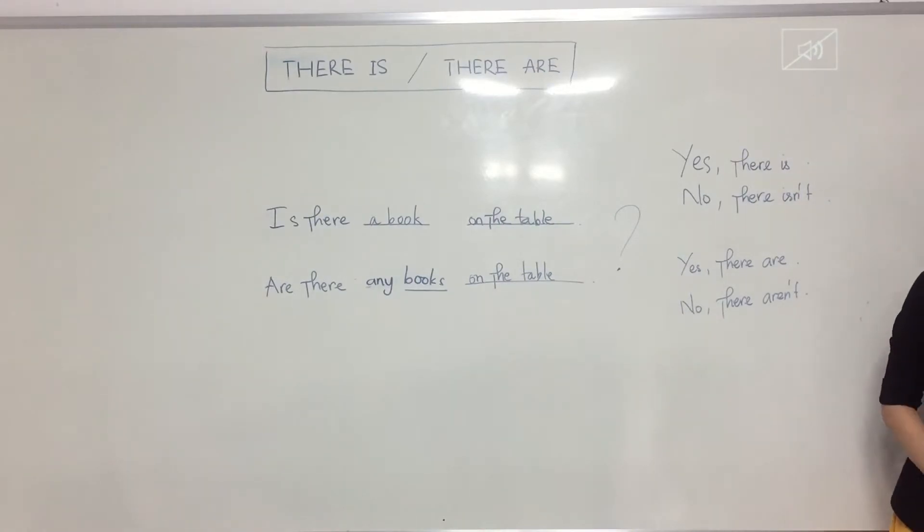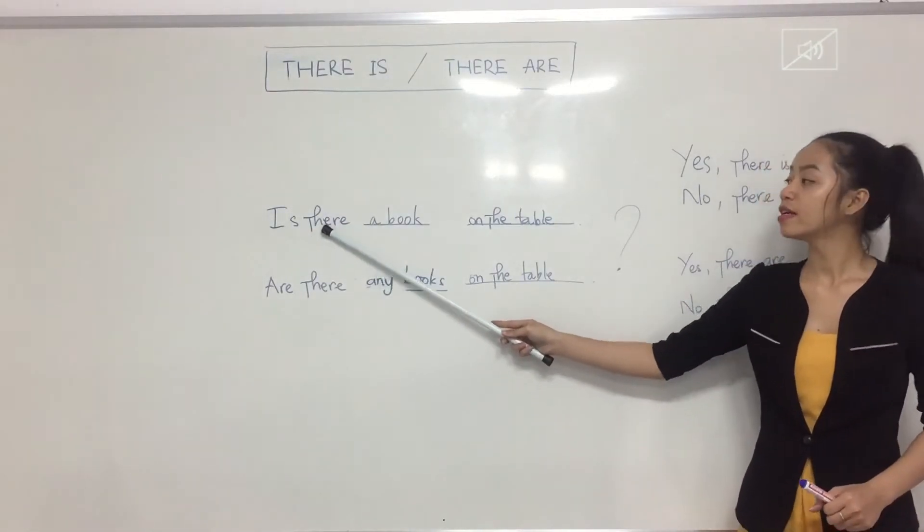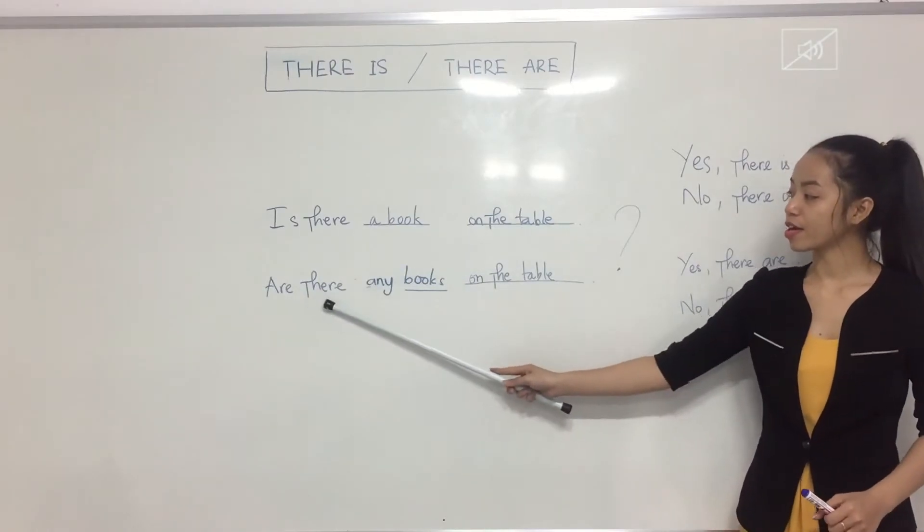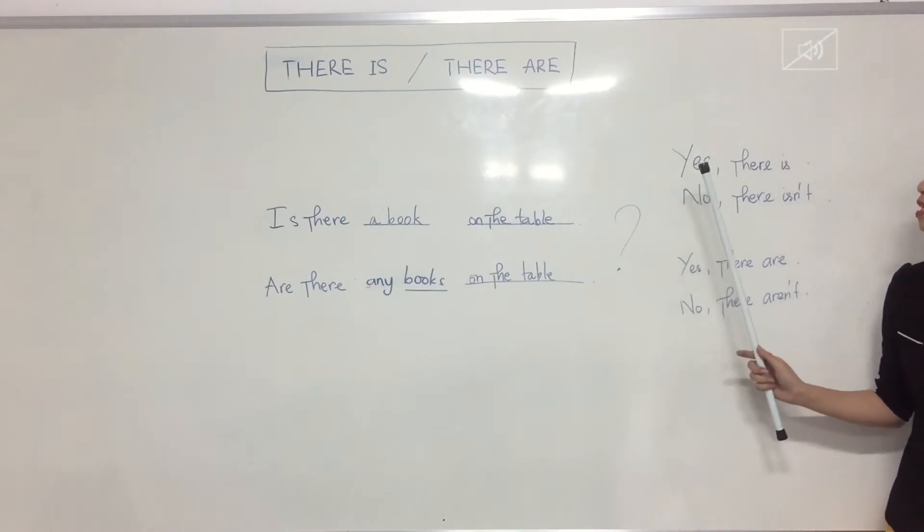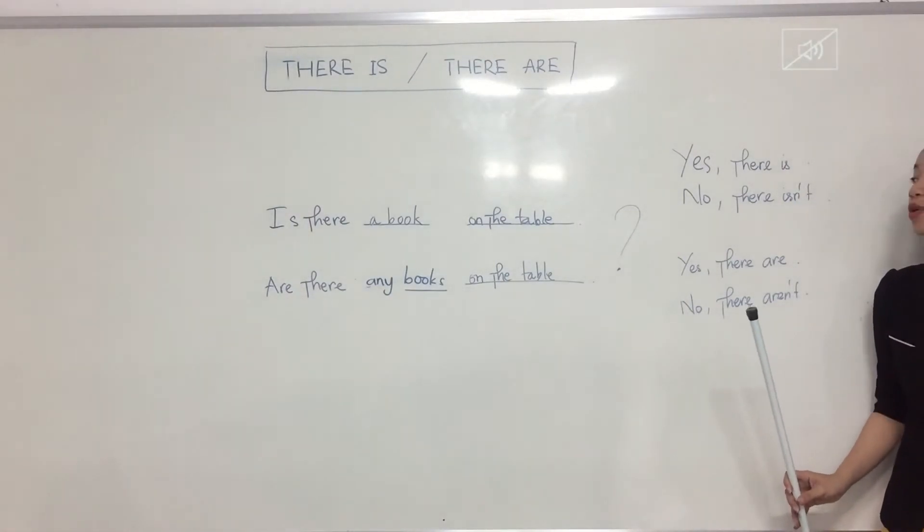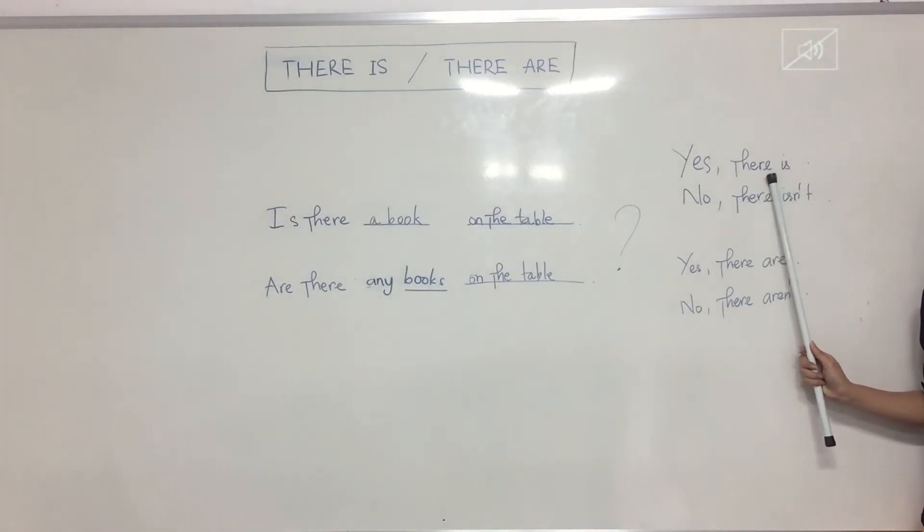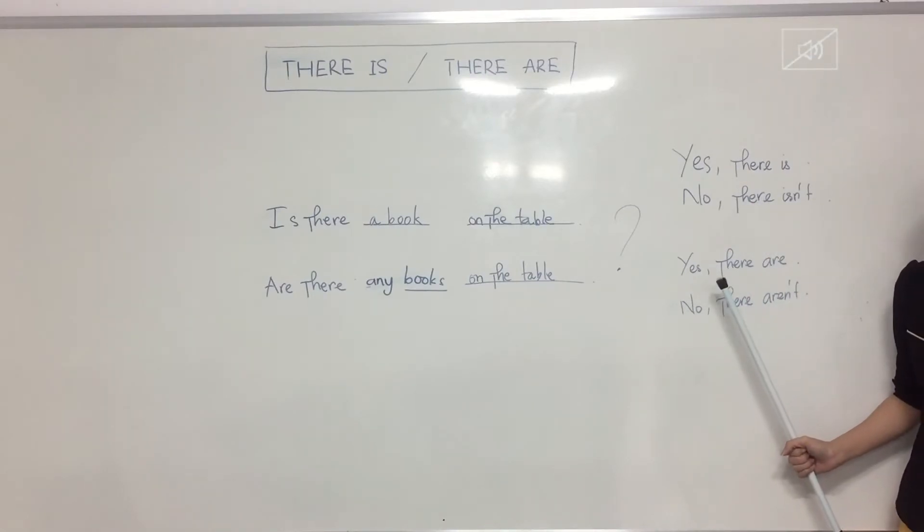All right, so repeat after me. Is there a book on the table? Again. Are there any books on the table? Again. Yes, there is. Again. No, there isn't. Again. Yes, there are. Again. No, there aren't. All right, so please answer the question with yes and no. Is there a book on the table? Is there a pencil on the table? Is there a cat in the room? Is there a girl in the classroom? Are there any books on the table? Are there any cats in the table? Are there any pencils on the table?